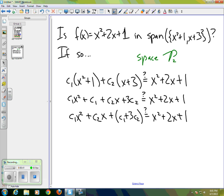So we have c1 x squared. That's the only x squared term. And the only x term is plus c2 x. But then we have the constant term c1 plus 3c2. And we want that equal to x squared plus 2x plus 1. Now, that would only be the case if c1 equaled 1. That's our first equation.